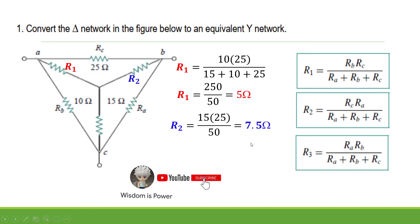You will do the same with R sub 2. R sub 2 will become 15 multiplied by 25, the two adjacent Delta resistors, divided by the sum of the resistances, that is 50. Therefore, the answer is 7.5 Ohms. The same thing with R sub 3, 15 multiplied by 10, the adjacent resistors, divided by 50, so you will get 3 Ohms.